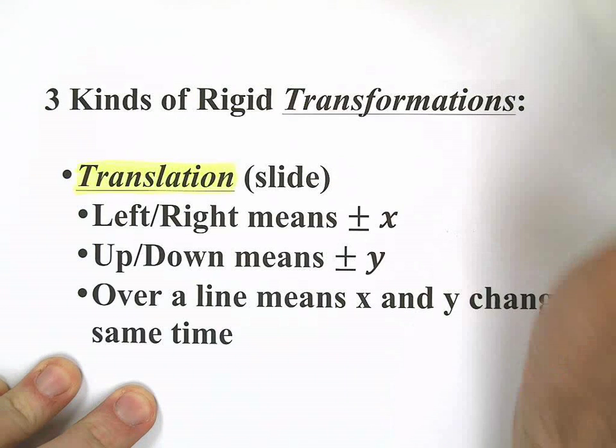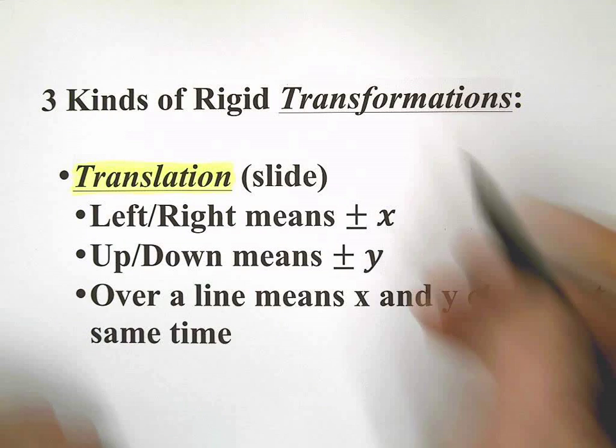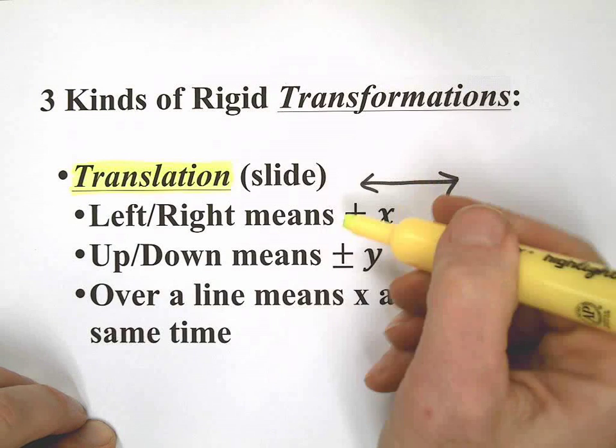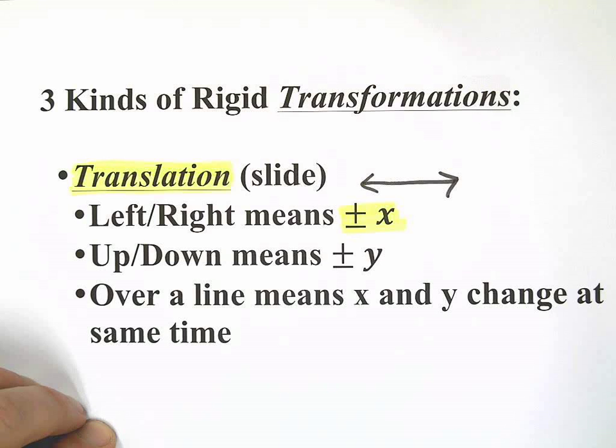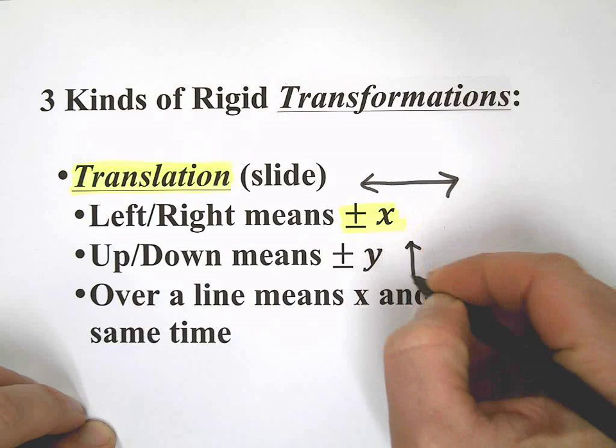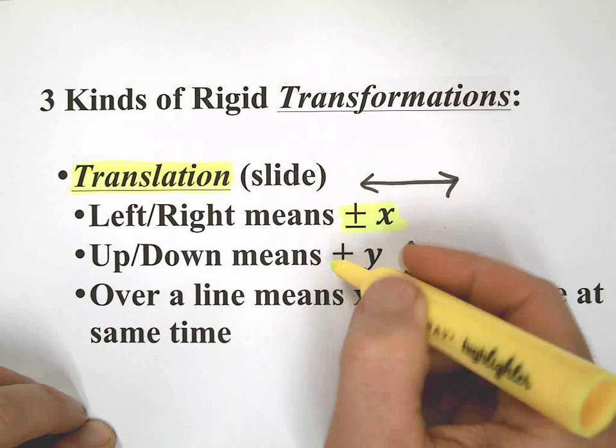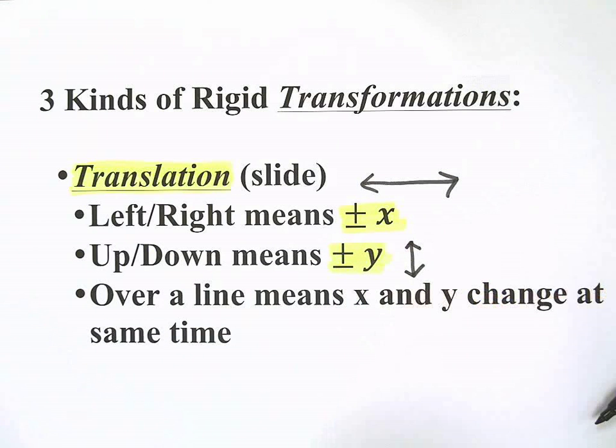They're either going to move left or right like this, which means plus or minus x. We like to talk about all these transformations in terms of a coordinate plane most of the time, and up and down just like the y-axis. That means plus or minus movement of the y coordinate, and we're just relating that to the x and y axis. You can also have movement over a line.